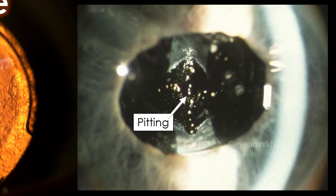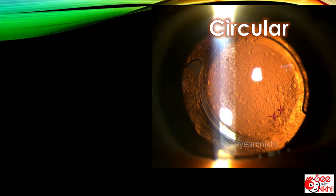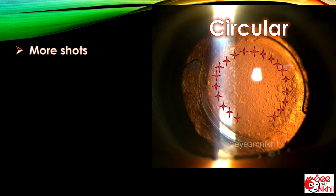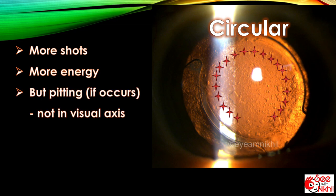In a circular pattern, a circular opening is created by firing shots adjacent to each other in a circular manner. This requires more number of shots, therefore greater amount of energy. But the advantage is that even if pitting occurs, it won't be in the visual axis.